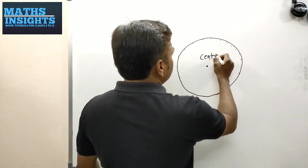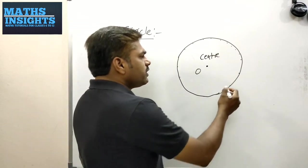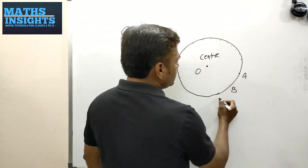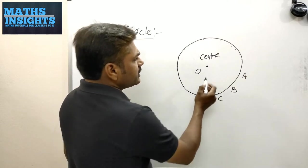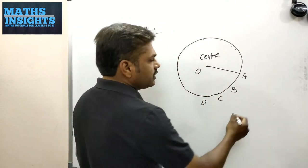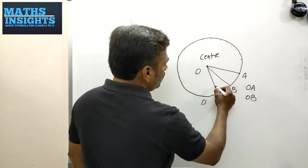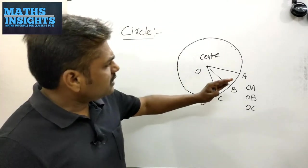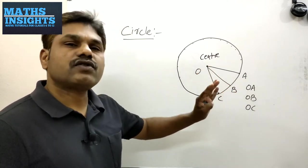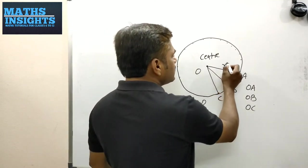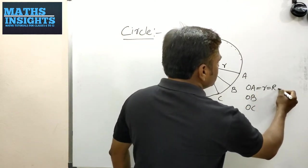The centre is represented by the capital letter O. You may name the points on the circle as A, B, C, D and so on. These points are said to be on the circle. If you measure the distance between O and A, O and B, O and C, and so on, you will find that the distance of all these points from the centre is the same, and this is called the radius. Radius is represented by the small letter r, therefore OA equals r.